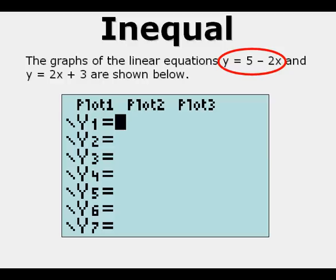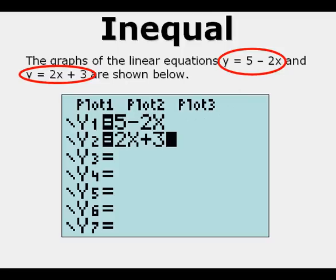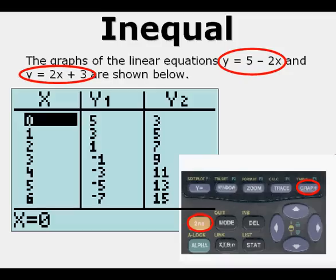In this case, we put 5 minus 2x next to y1, and then we put y equals 2x plus 3 in the next row. After we do that, we can graph and we can see our functions there. From there, we can go to the table view if you want by pressing second graph and really evaluate.